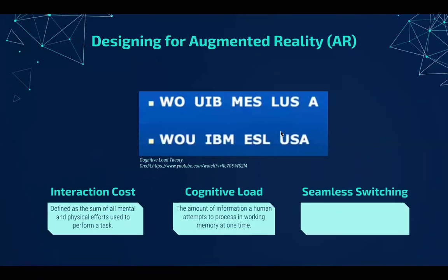The next consideration is something called cognitive load. Look at the top and bottom lines of text. If I were to show you both lines and ask you to replicate them from memory, you'd probably have more success replicating the bottom line. This is because your brain processes information in separate groups called chunks. In the bottom line, your brain groups each acronym into a single chunk like IBM or USA. The top line, however, features randomly placed letters of differing length, which forces your brain to treat each letter as a separate chunk. Cognitive load theory tells us that the brain can only handle so many chunks of information at once, and the lower that amount, the better.